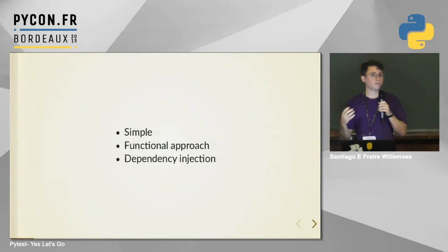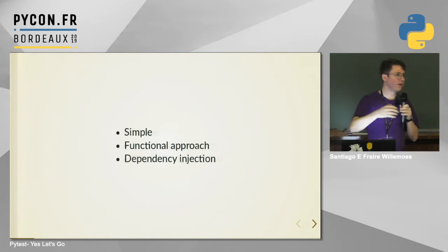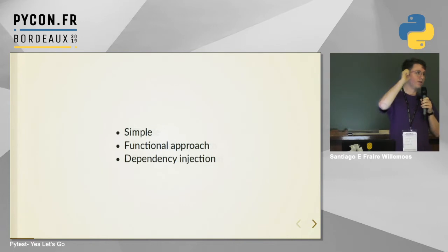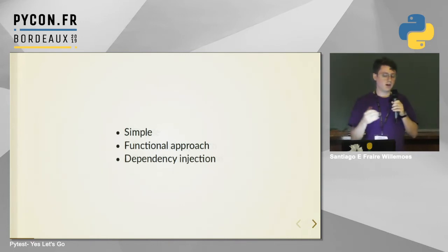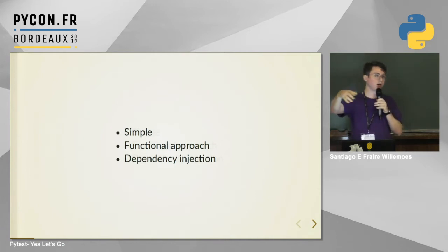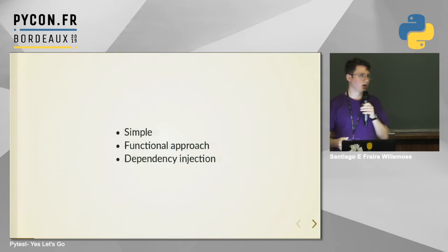By simple, we don't need to import anything or use anything extra. With a functional approach, we just declare a function, use the assert statement which is part of Python, and that's it. If you're using unittest, you have to import the test case, create a class, and do all that extra stuff, which when you're new can be a lot.